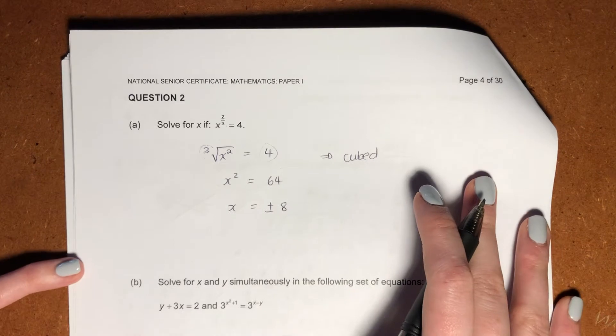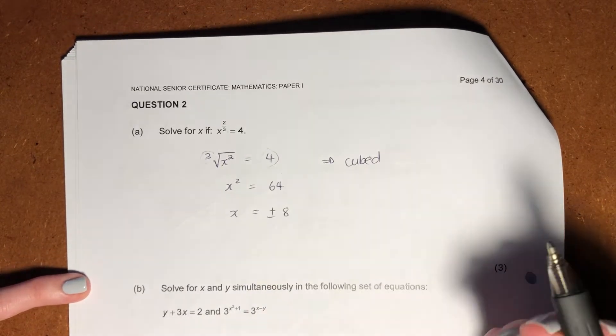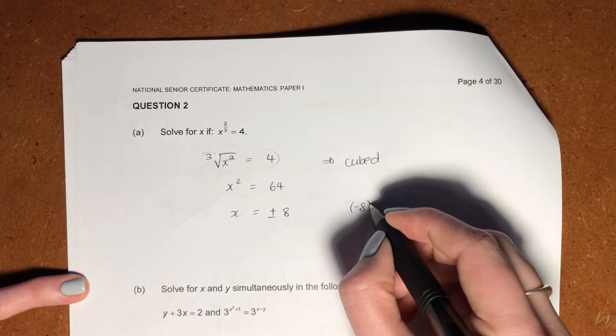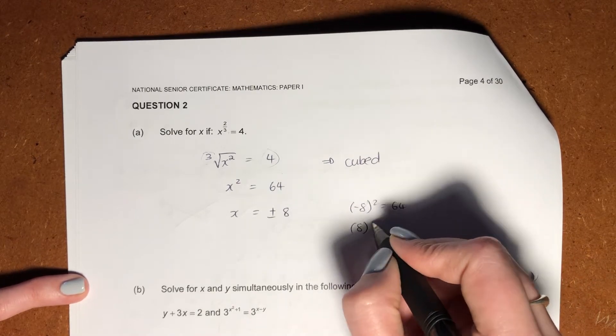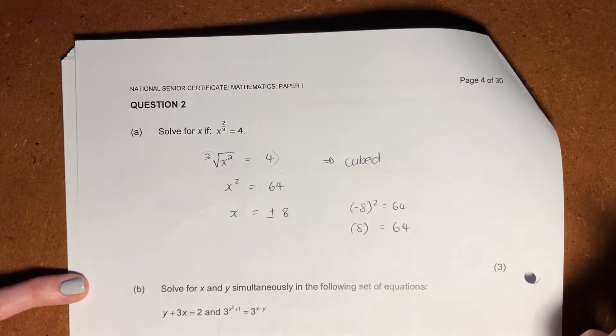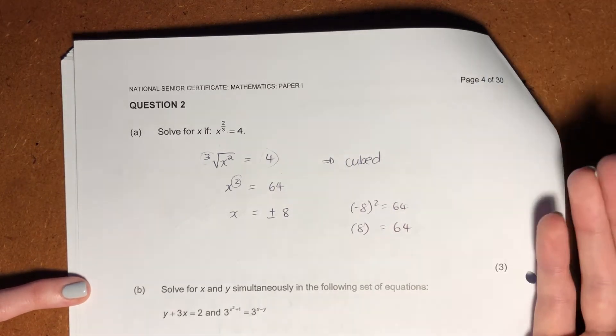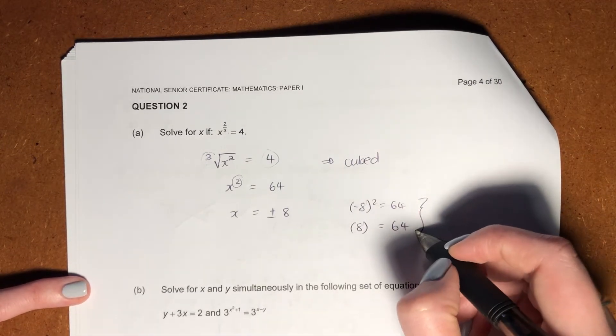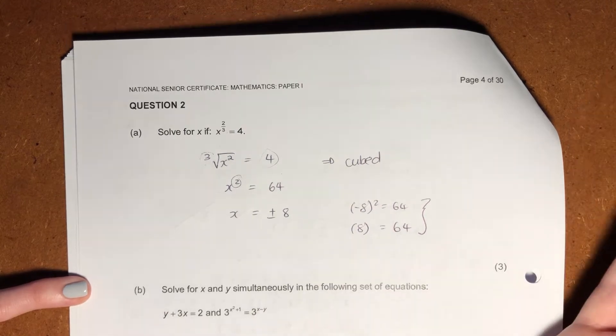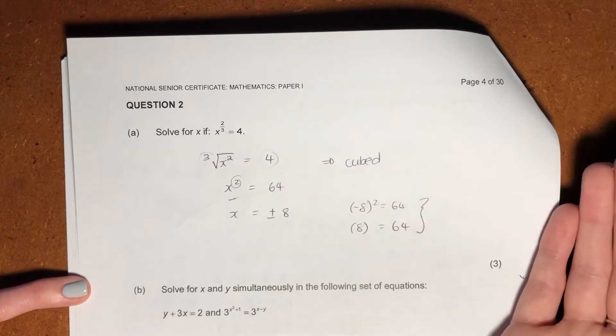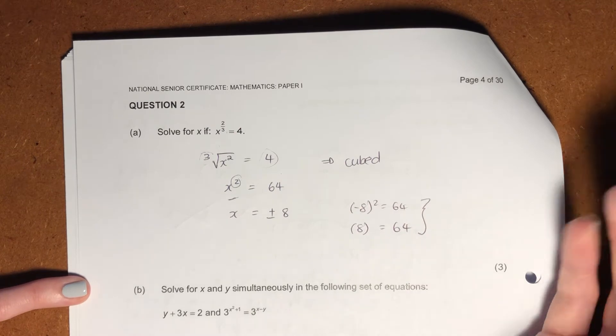Now importantly here, why is it plus minus 8? Because look, negative 8 squared gives me 64, and 8 squared also gives me 64. So whenever I'm getting rid of a square by using a square root, you should be anticipating two answers, the same way that you do when you factorize using an x squared. So be careful there.